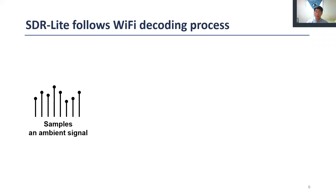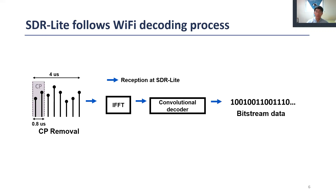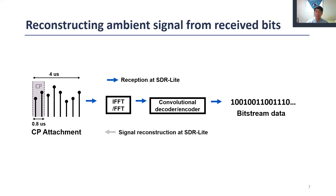The ambient signal is sampled, and the front 0.8 ms signal for each 4 ms is deleted. This sample goes through an IFFT function, a convolutional decoder, and outputs decoded bits. To reconstruct the ambient signal, we insert the decoded bit stream data following the Wi-Fi encoding process. That is, decoded bits go through a convolutional encoder, FFT, and CP attachment function. Therefore, we can reconstruct an ambient signal using the decoded payload bits.